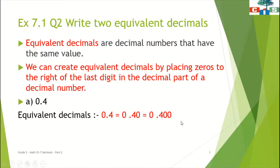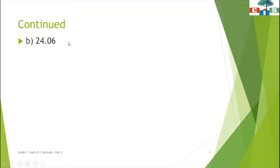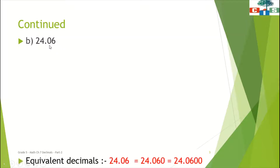Now we will see one more sum, that is sum B: 24.06. We have to write two equivalent decimals for 24.06. What we have to do? We have to put zeros after 6.